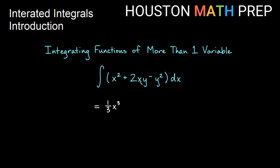Integrating x by the power rule gives us x squared over 2. That over 2 is going to reduce the 2 in the front of our term, and we'll get x squared y. For our last term, notice that minus y squared is just a constant. Integrating negative y squared dx, we just multiply in an x and get negative x y squared.